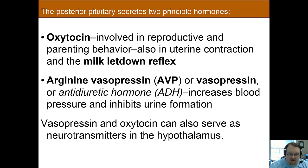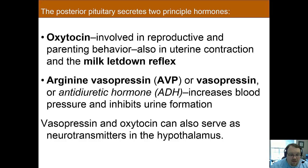The posterior pituitary releases two important hormones: oxytocin and vasopressin. Oxytocin is involved in many aspects of parental and reproductive behavior, and it's often used in medical settings to induce labor. In mothers who have recently given birth, it also triggers the milk letdown reflex, which is important for breastfeeding.